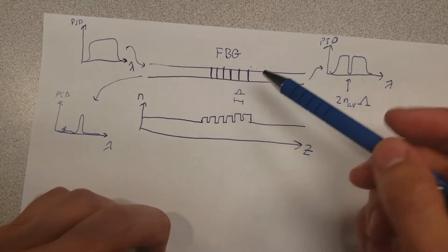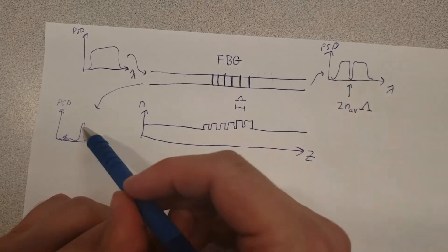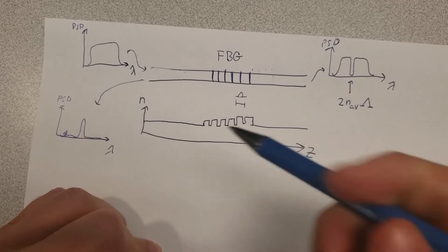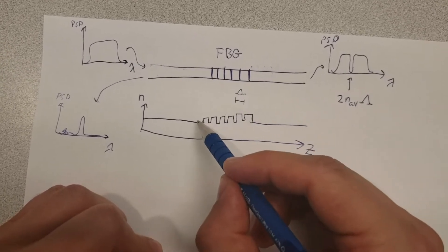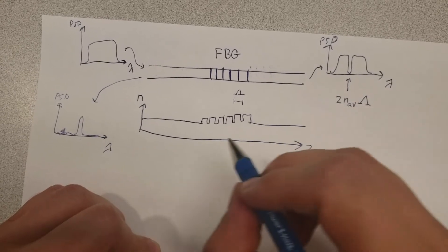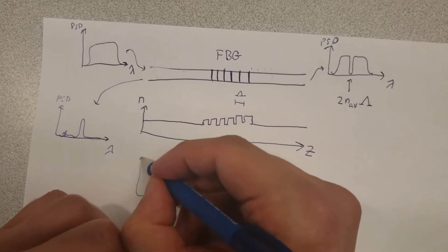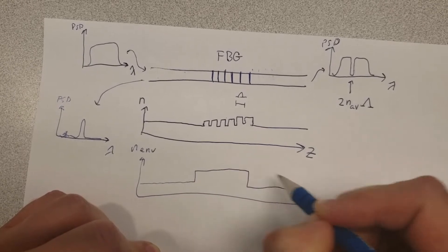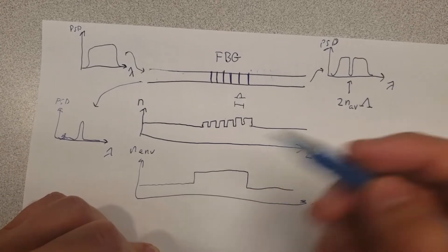Another interesting aspect of fiber Bragg gratings is that while the center wavelength depends on the grating spacing, a range of wavelengths gets filtered out. It turns out that the envelope of the refractive index change determines the bandwidth, and the relationship is a Fourier transform. If the envelope is a square — a constant increase periodically modulated — then the reflection spectrum will be a sinc function, which looks like sine(x)/x.